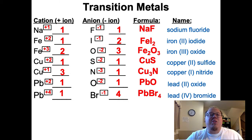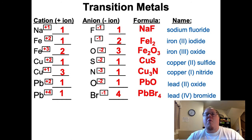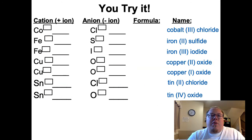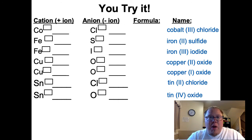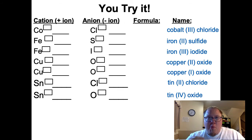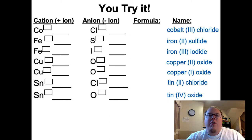That is how you deal with transition metals and Roman numerals telling you what the charges are. Remember: Roman numeral equals the charge. Now I want you to try it. Here are some practice problems with names given - the Roman numerals tell you the charge on that transition metal ion. For example, cobalt 3 means a plus 3 charge for cobalt. Pause the video now and figure out what the formulas for all of these are. Try before we walk through them.